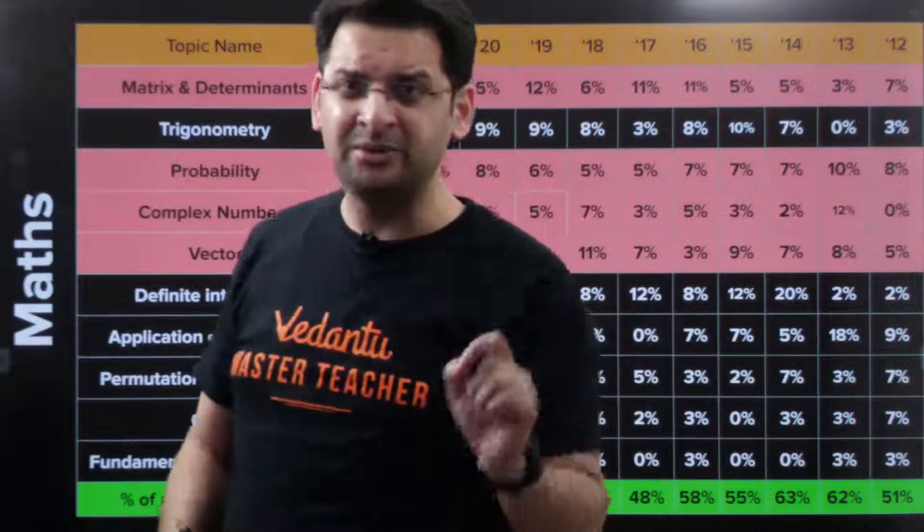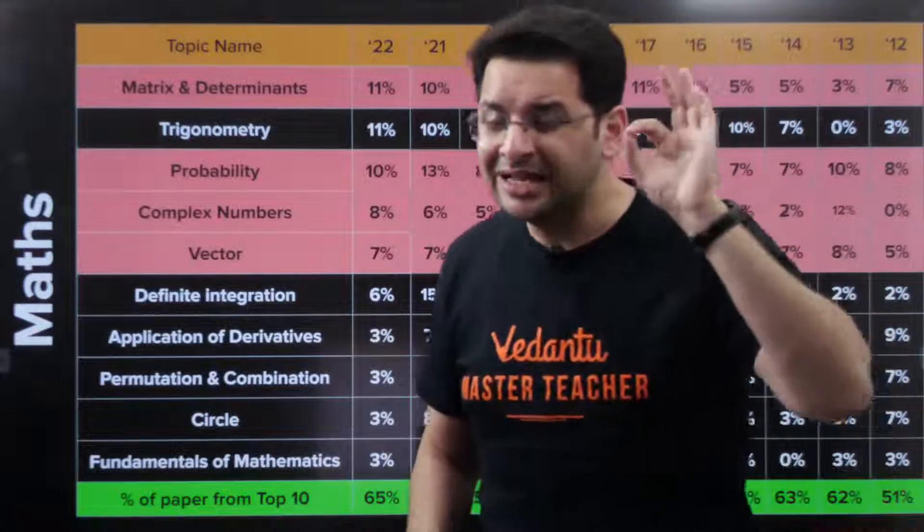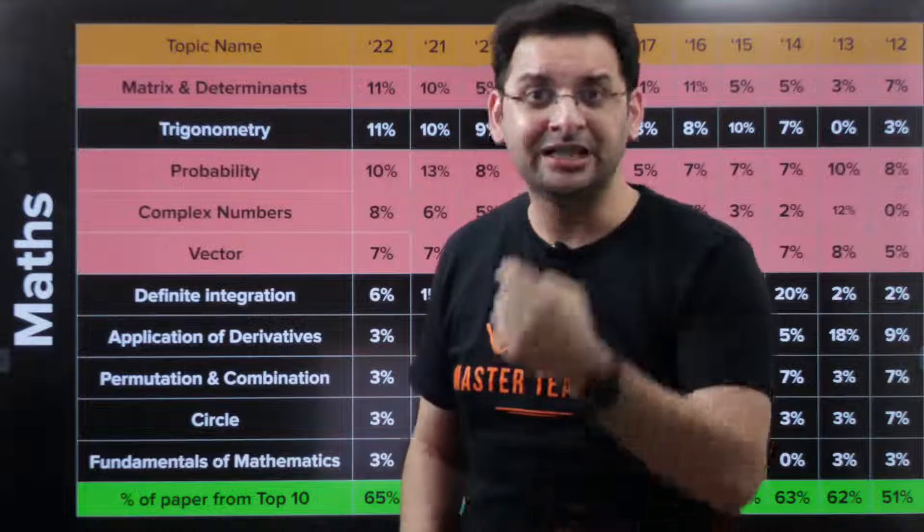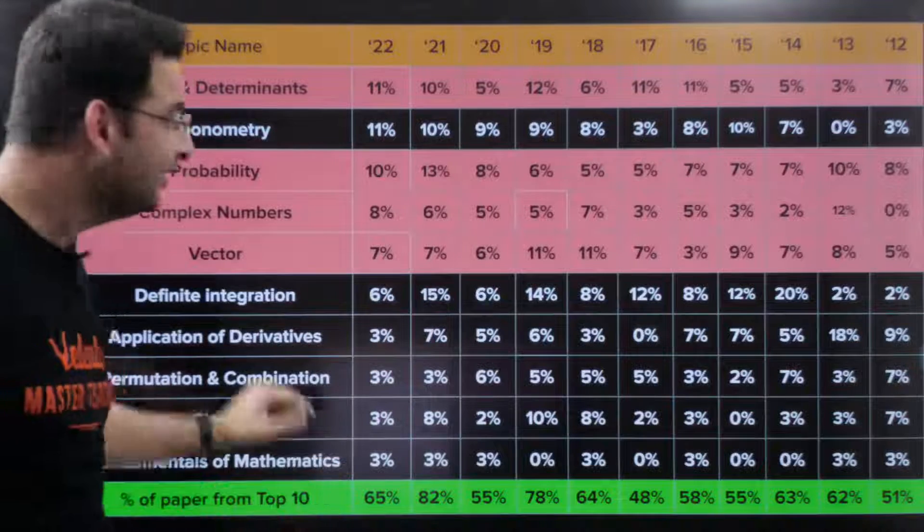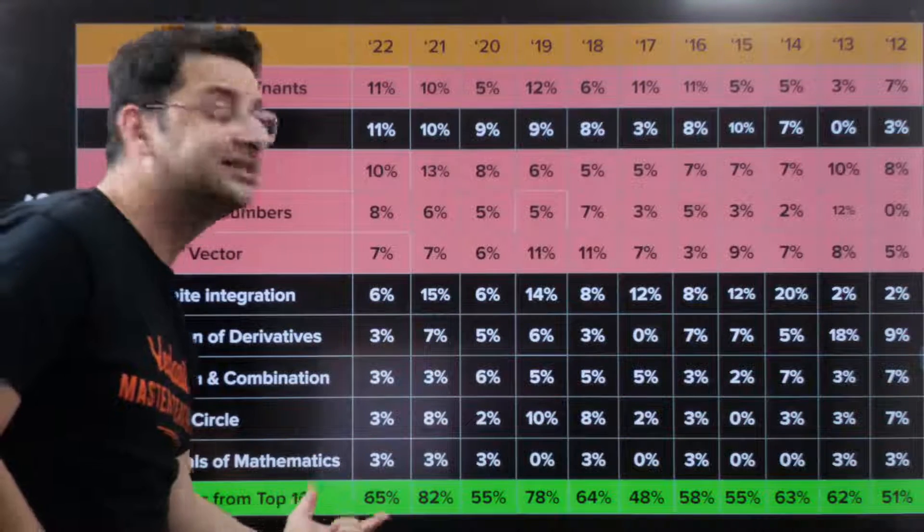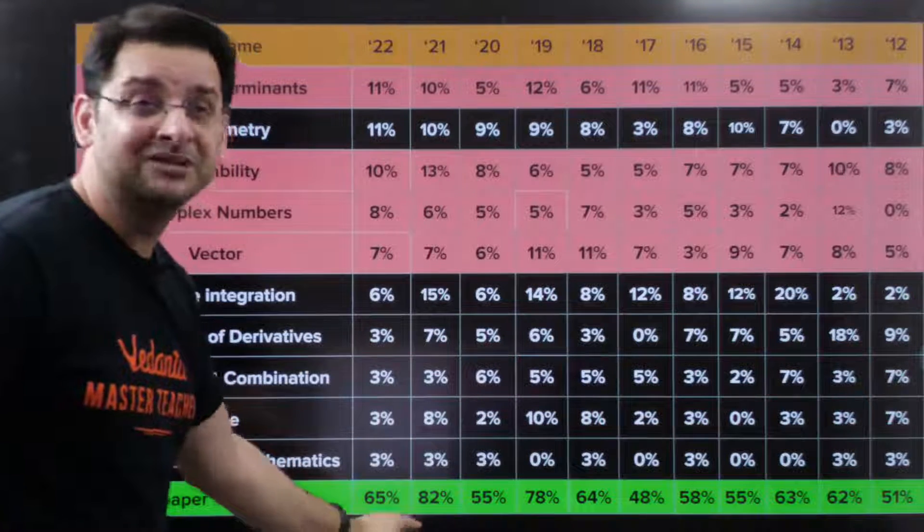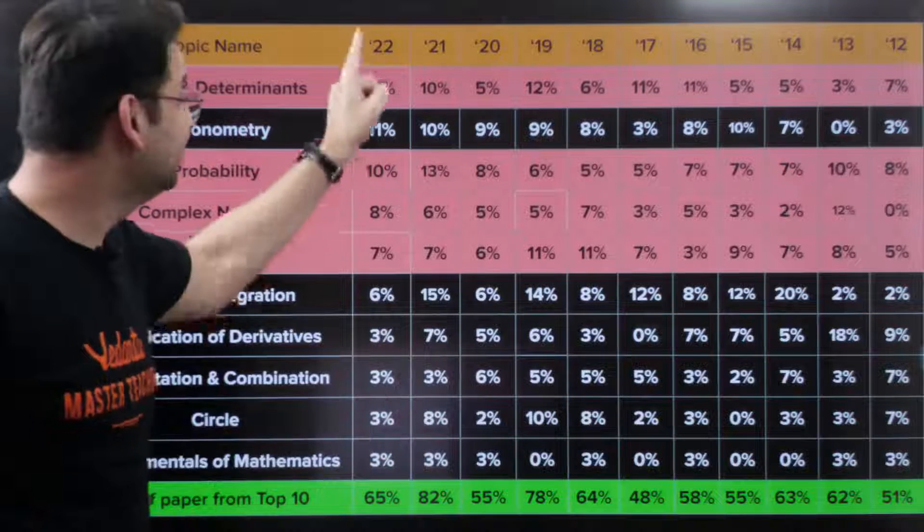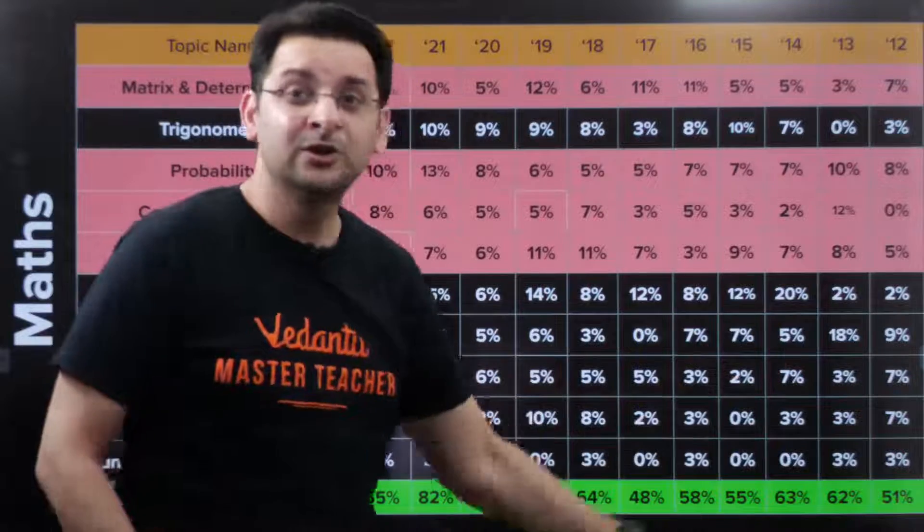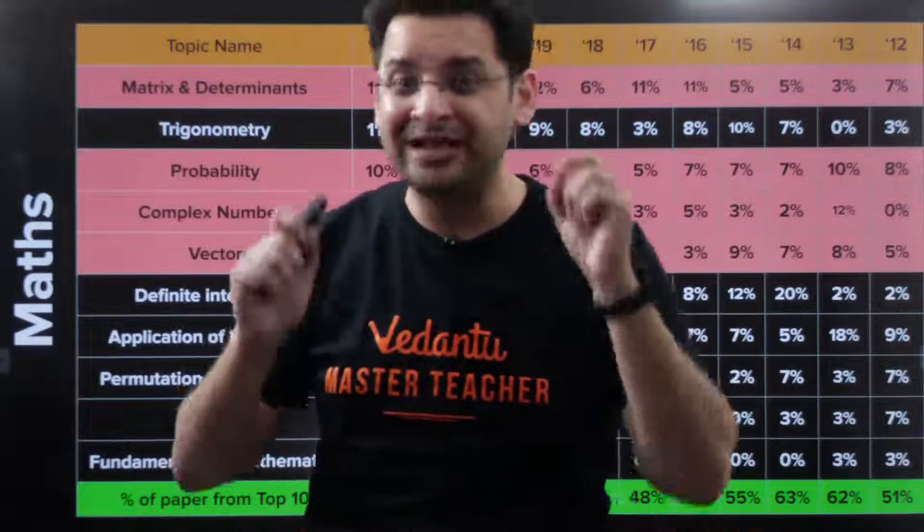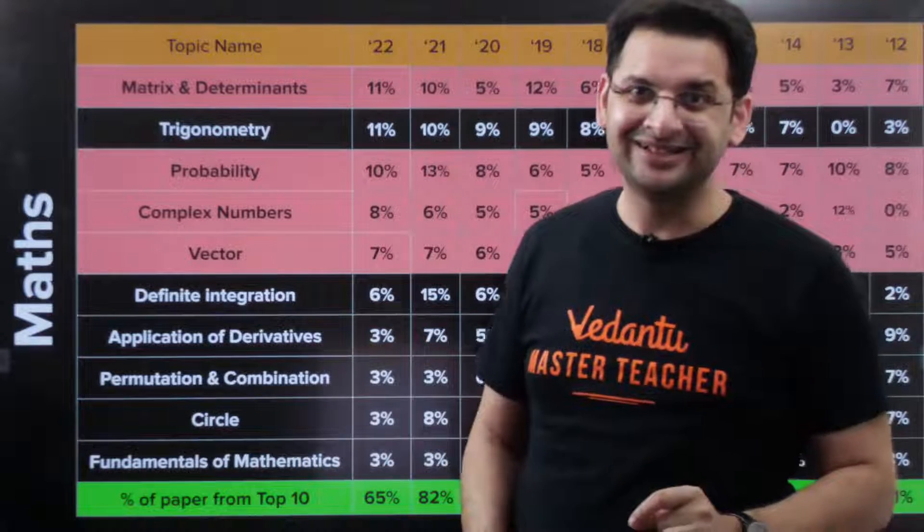These are the top 10 chapters. If you count the total number of chapters in mathematics, there are around 30, including class 11 and class 12 topics. And I am giving you top 10. That is one third of those topics, which ideally should contribute 33 percent. But these 10 topics are contributing as high as 65 percent marks in one paper, 82 percent marks, 55, 78 percent in 2019. That shows these are very important topics and you cannot, cannot, cannot ignore these topics.